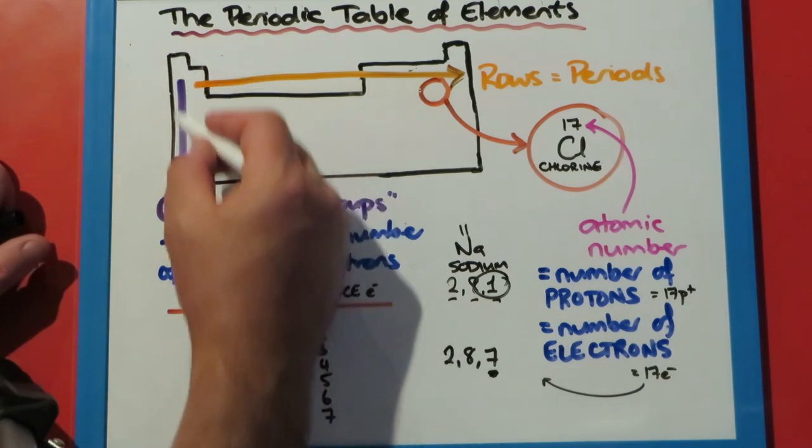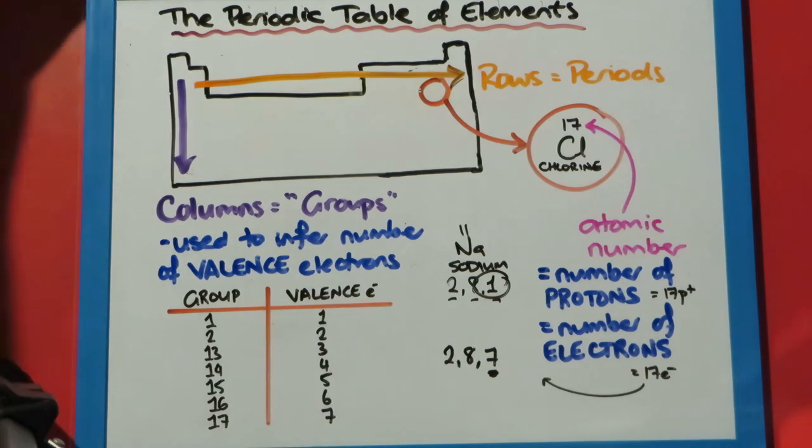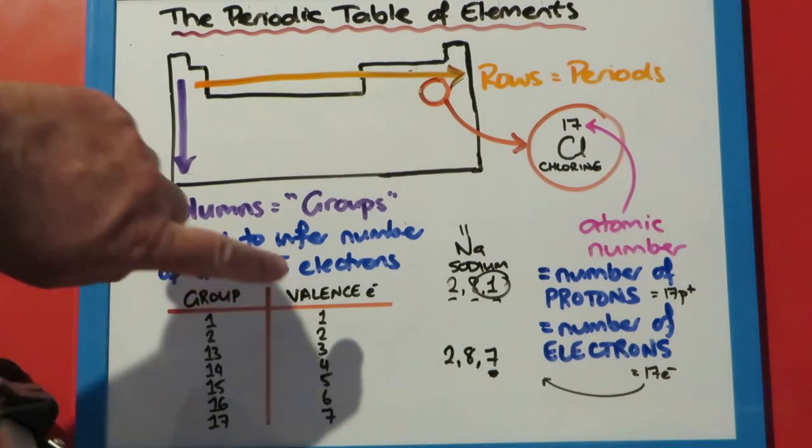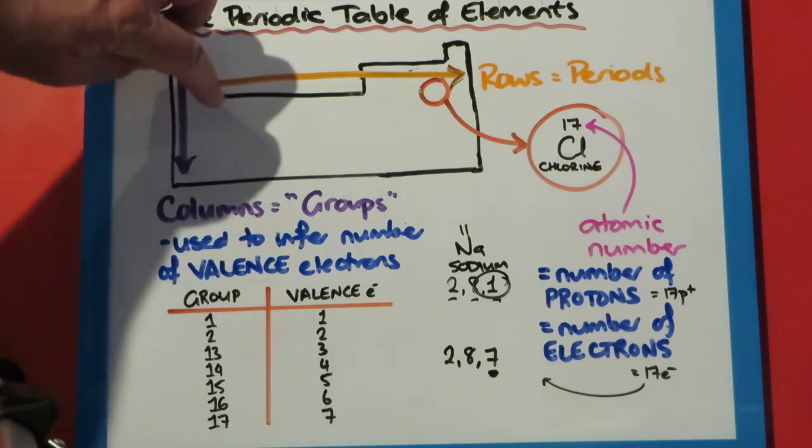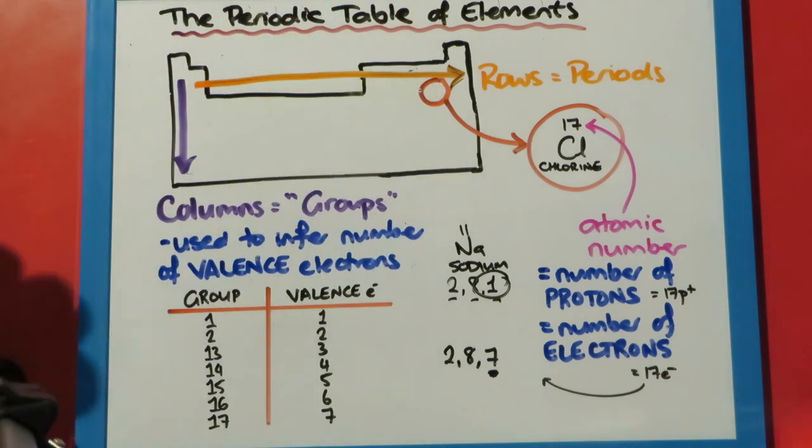So the group tells us how many valence electrons, or outside electrons, each atom has got. Group 1: one. Group 2: two. We skip 3 up to 12. They are called transition metals and we'll look at those in year 13.